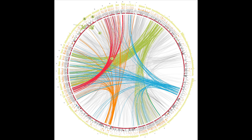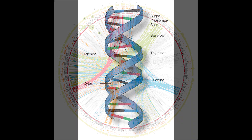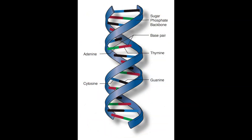First and foremost, our genetic makeup is defined by DNA. DNA is the blueprint, the template for all aspects of a biological organism. DNA, or deoxyribonucleic acid, is formed through a deoxyribose sugar, a phosphate group, and the combination of four nucleotides: adenine, thymine, cytosine, or guanine.